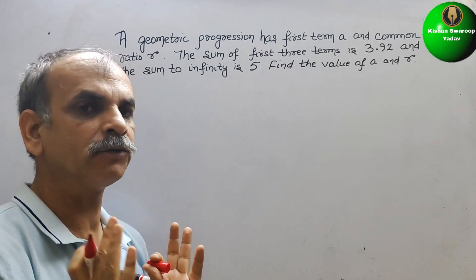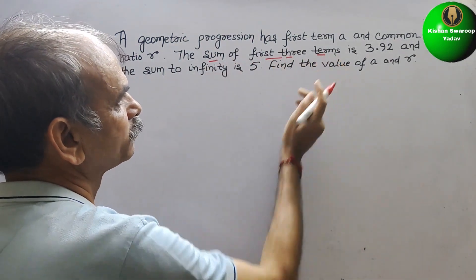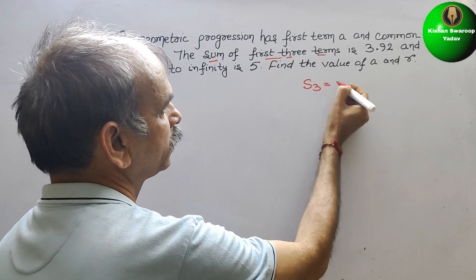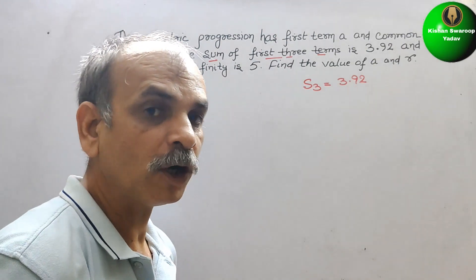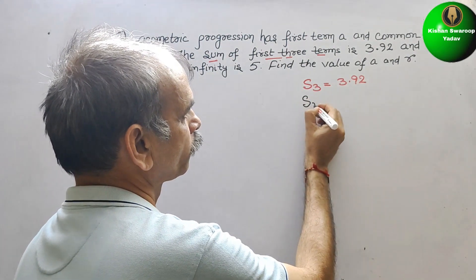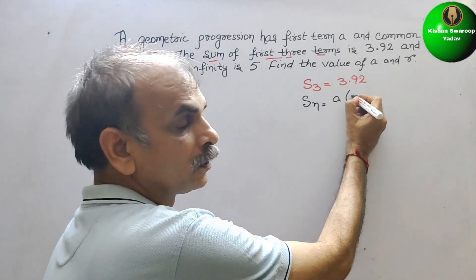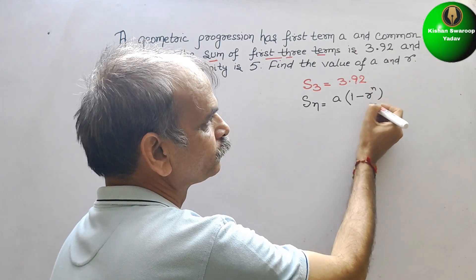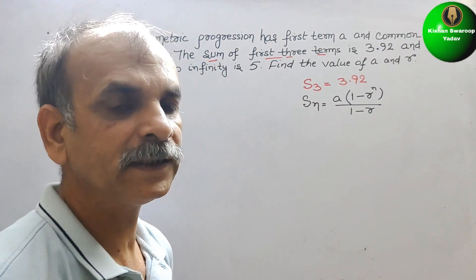So what they have given you, we have to see that. The sum of first three terms, that means S3, is 3.92. But what is the sum formula? We will write Sn is equal to A times 1 minus R to the n by 1 minus R. So this is the sum formula.